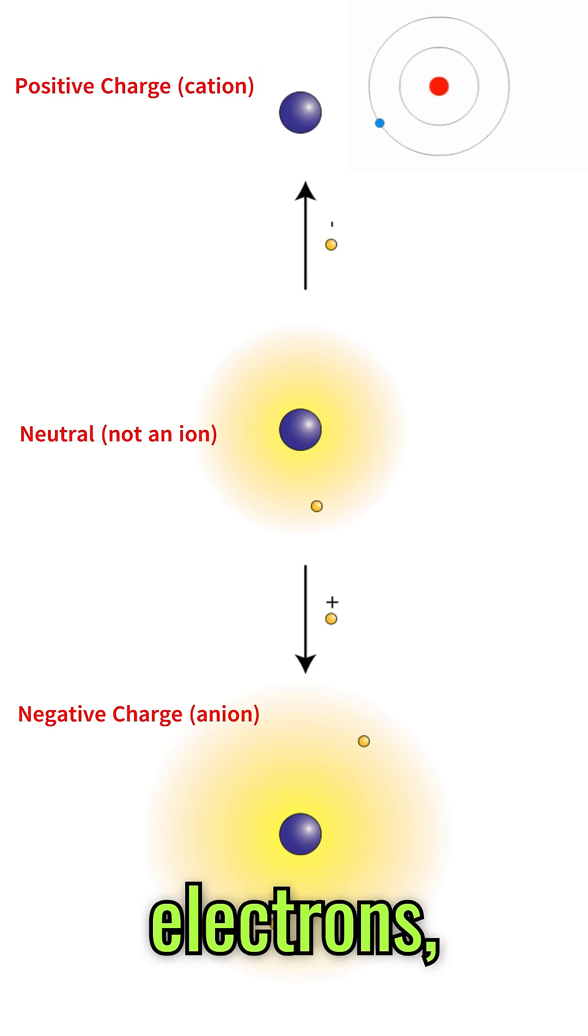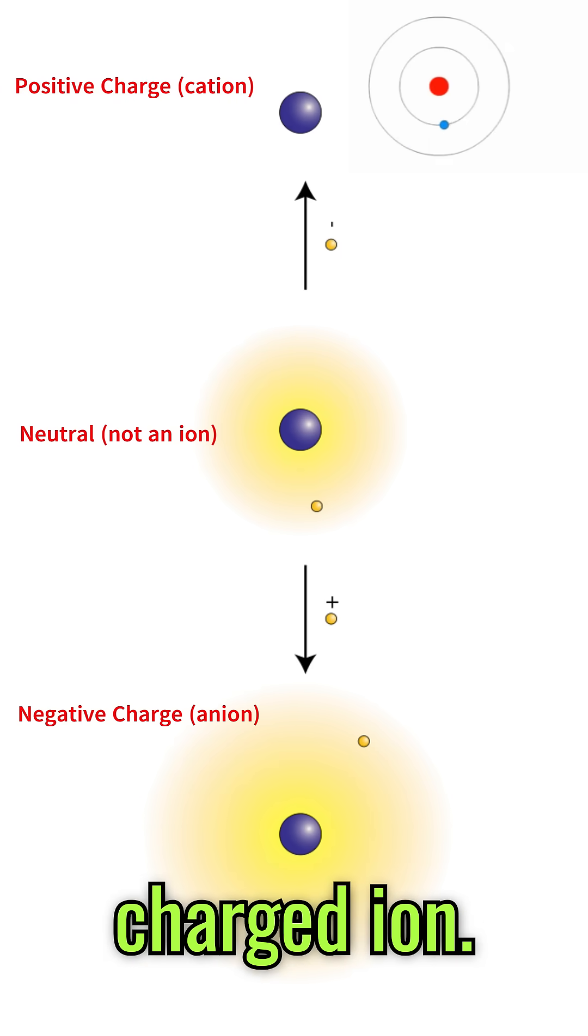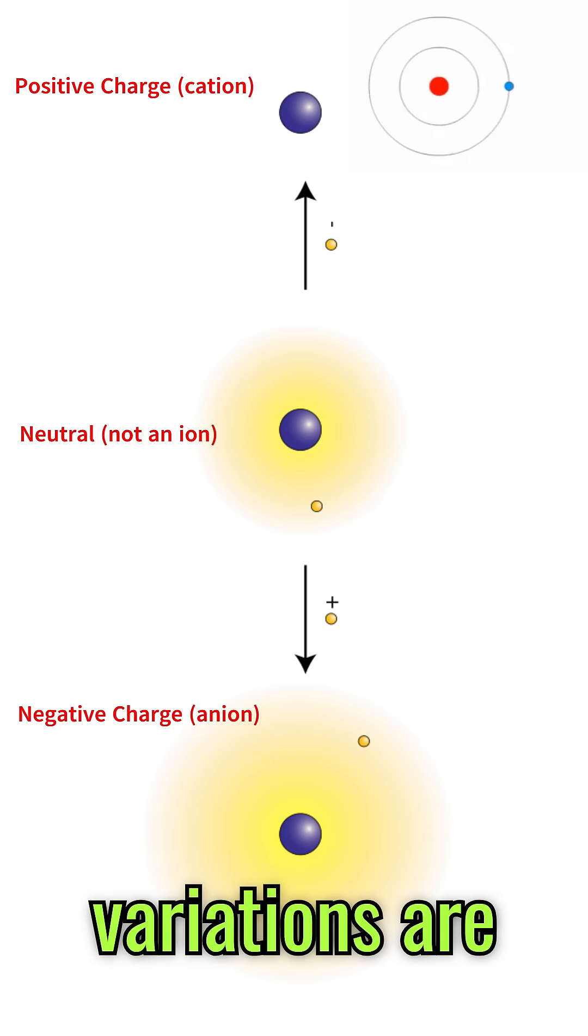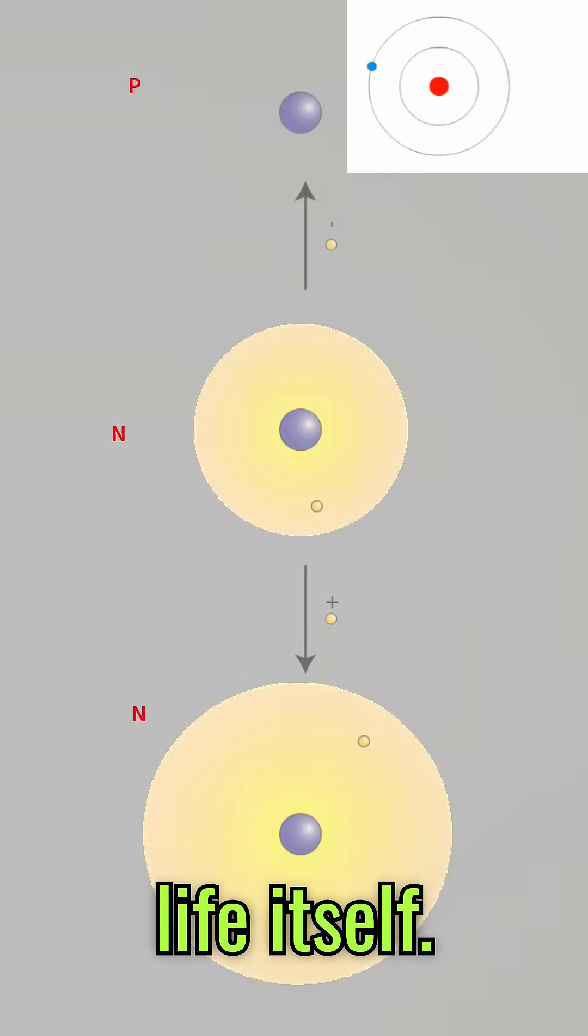Atoms can also lose or gain electrons, becoming ions. Lose an electron and you have a positively charged ion. Gain an electron and the charge becomes negative. These variations are the basis of chemistry and life itself.